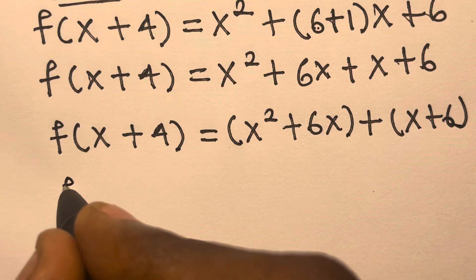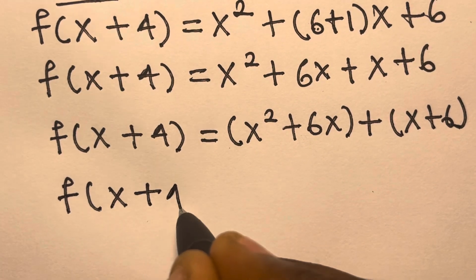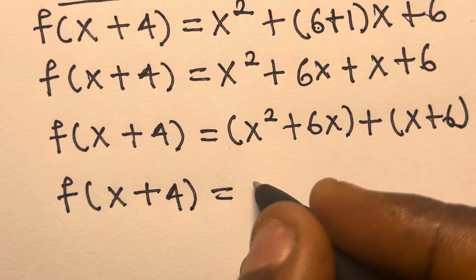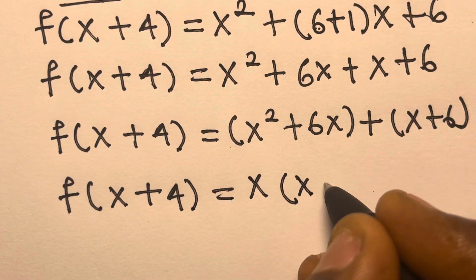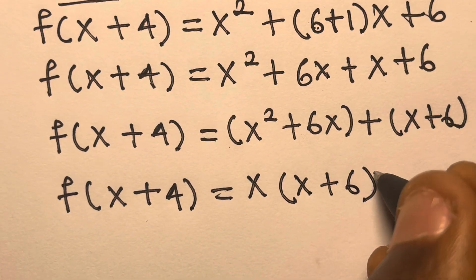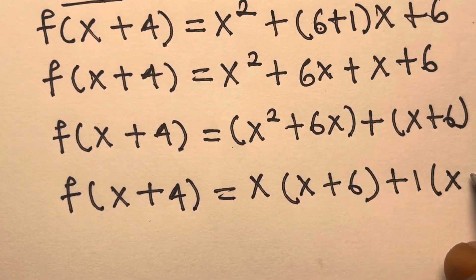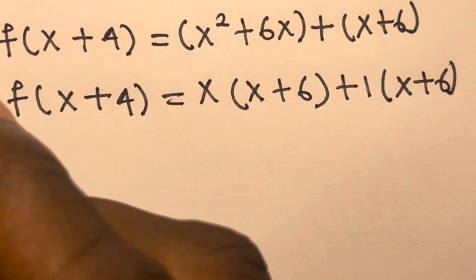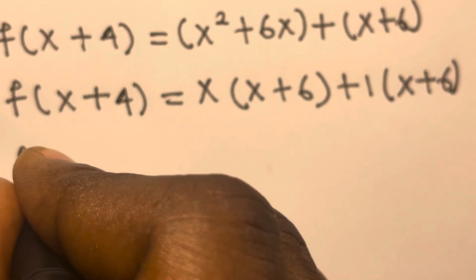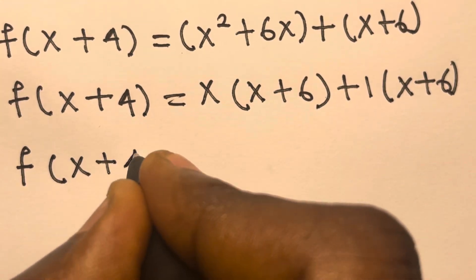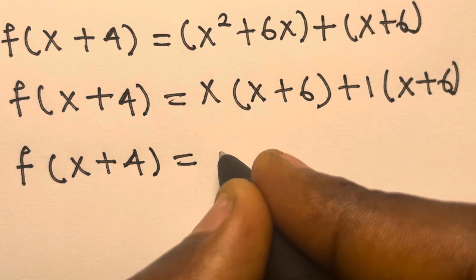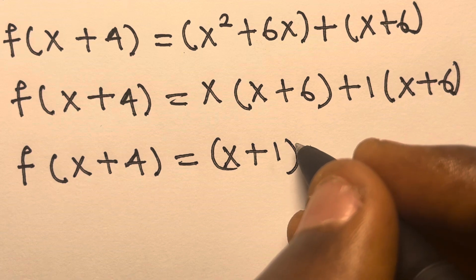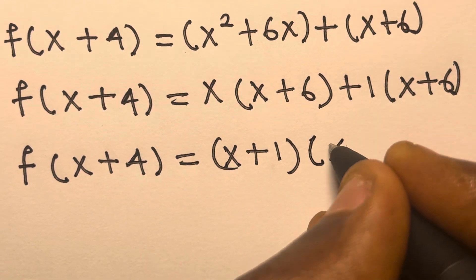So now we have f(x+4): what's the common factor here? We have x multiplied by (x+6) plus 1 times (x+6), right? So we have f(x+4) equals (x+1) times (x+6).